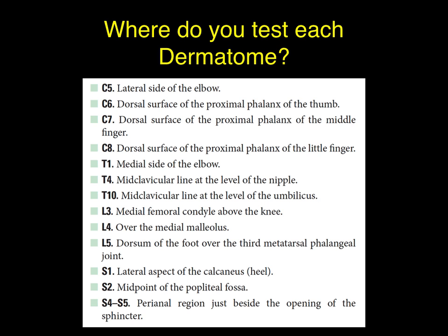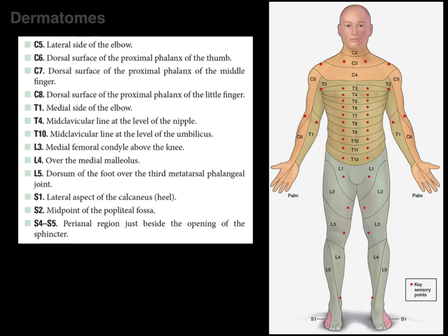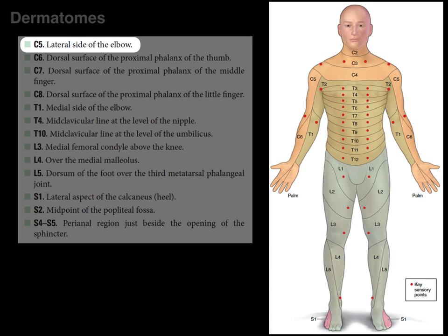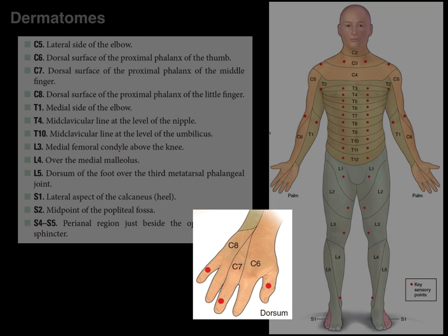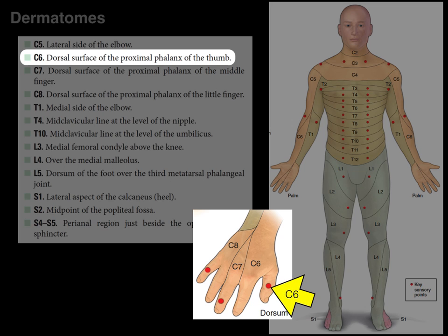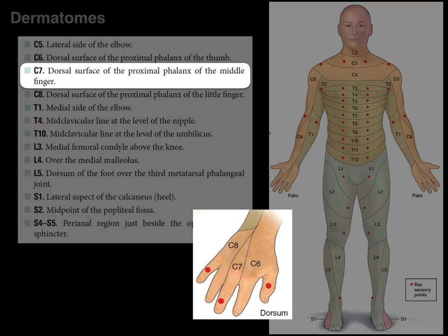So where do you test each dermatome? The C5 dermatome is tested by touching the lateral side of the elbow in anatomical position, above the skin overlying the lateral epicondyle of the humerus. C6 is tested by touching the dorsal surface of the proximal phalanx of the thumb — basically the part of the thumb where the thumbnail is. The C7 dermatome is tested by touching the dorsal surface of the proximal phalanx of the middle finger, your middle finger.